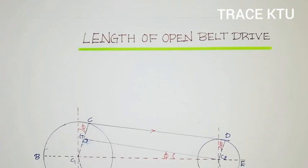We're going to study the procedure for the open belt drive. The length formula is: L equals pi into (capital D plus small d) by 2, plus (capital D minus small d) whole square by 2C, plus 2C, where C is the center distance.